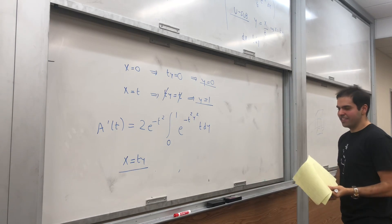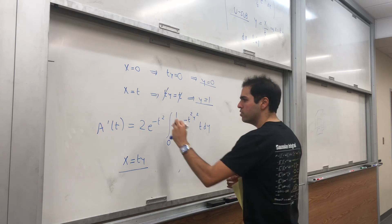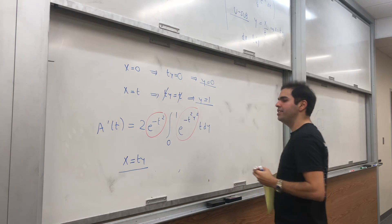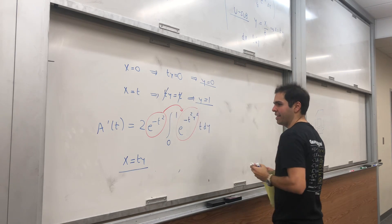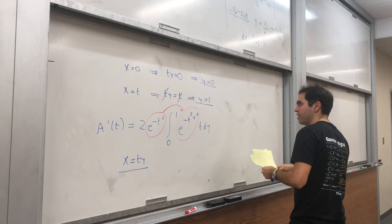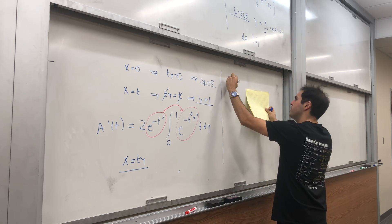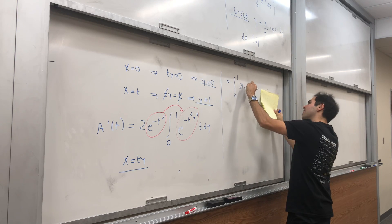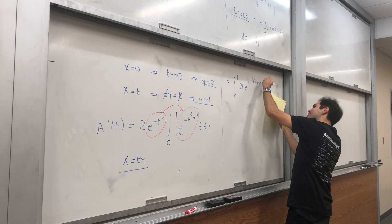And here's a nice thing. Those two terms, they look pretty similar, right? So we have e of negative t squared and e of negative t squared y squared. So why not just put this inside? And in the end, we get the following. That equals to integral from 0 to 1 of 2t e of negative t squared, 1 plus y squared dy.